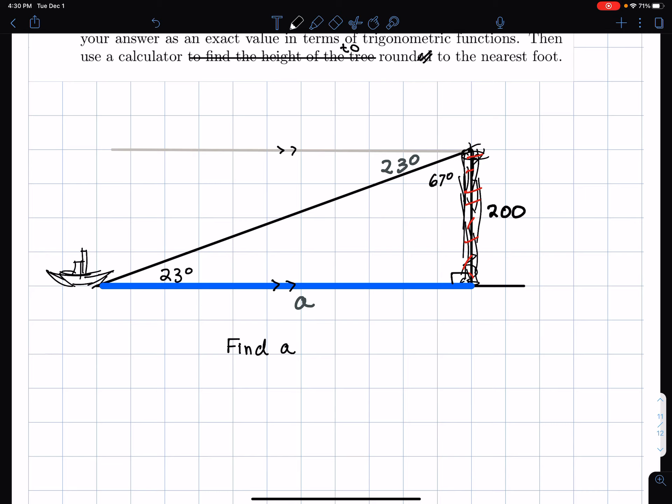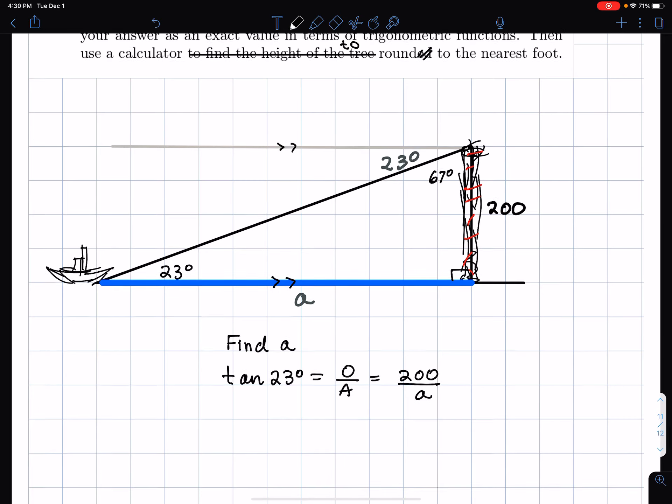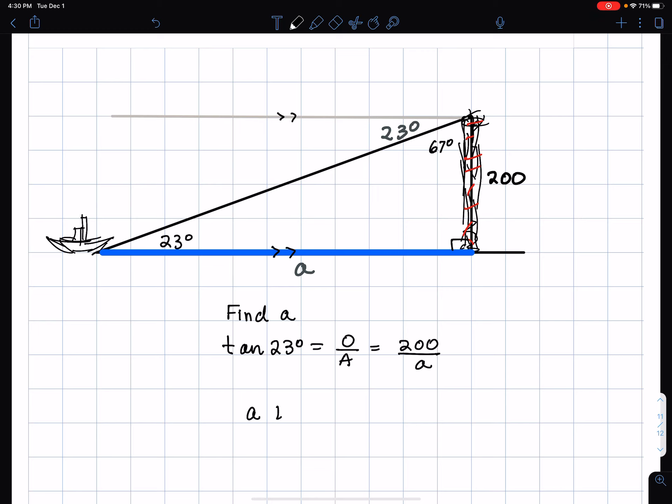Now, what am I going to use? I have opposite of 23 is 200. And I'm trying to find A, which is adjacent. So I have 23. So what I'm going to use is I'm going to use tangent. I'm going to have the tangent 23 degrees is equal to opposite over adjacent, which is 200 over A. Multiply both sides by A. So A tangent 23 degrees is equal to 200.